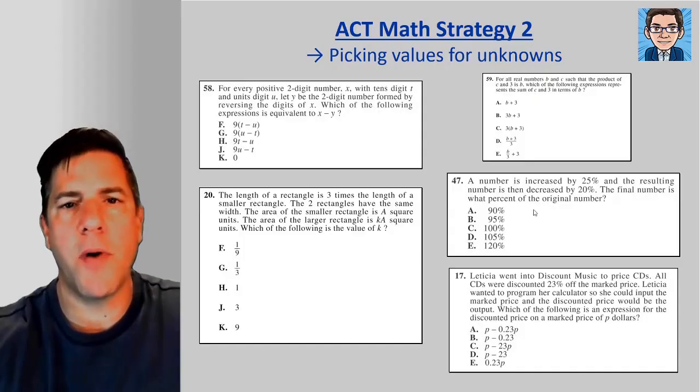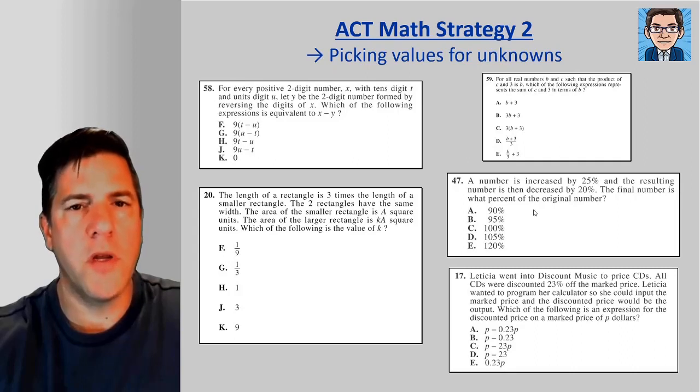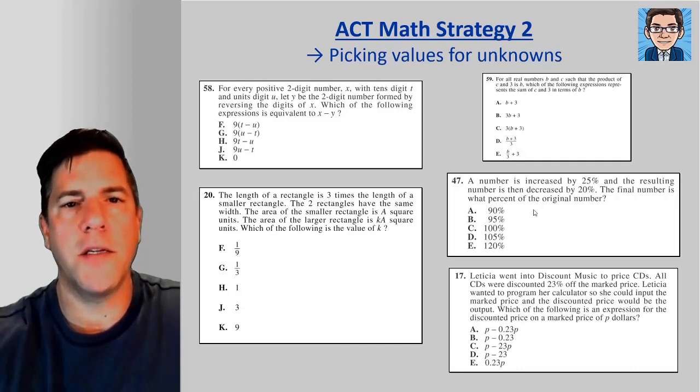Sometimes ACT problems can get complicated with a number of different variables. So we can simplify that by, rather than using the variables throughout the problem, we can pick values for those variables and make the problem a lot simpler. So I've got five problems here from the ACTs that we can solve and talk about to show how we're going to utilize that strategy.